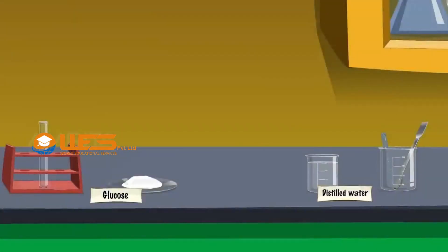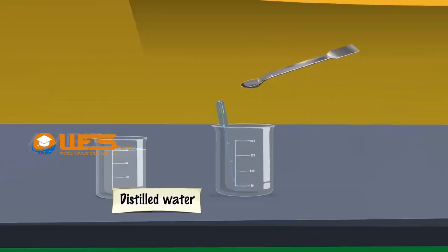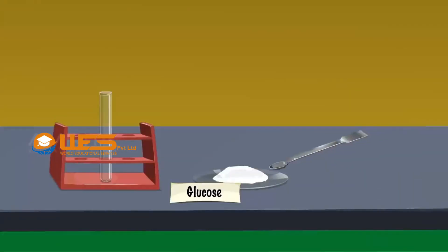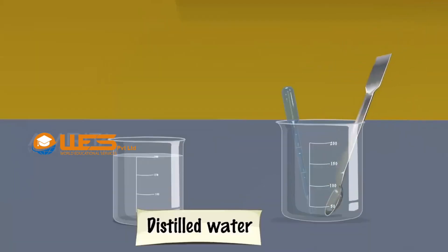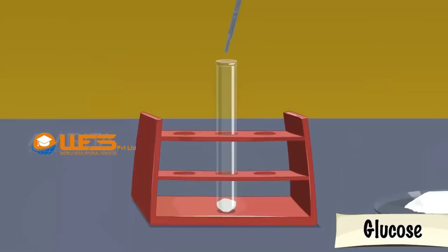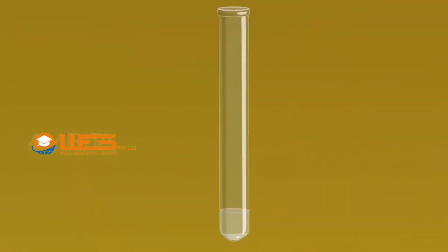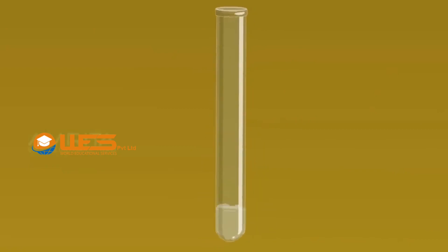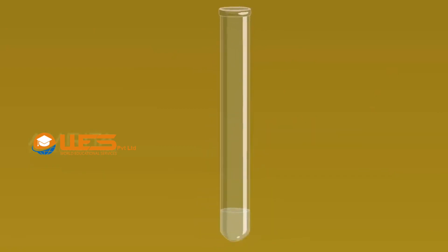Glucose. Using a spatula, take a small quantity of glucose and put it in a test tube. Take about 3 ml of distilled water in a dropper. Pour it into the test tube and shake the test tube well. Glucose completely dissolves in water.